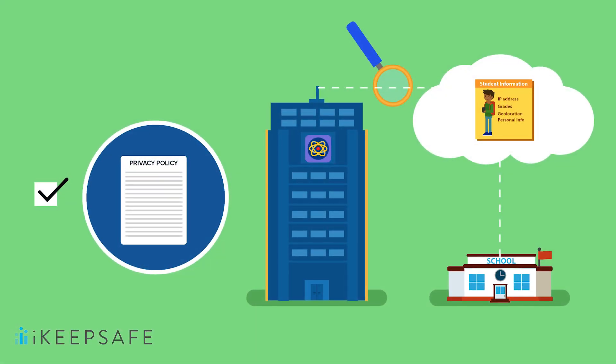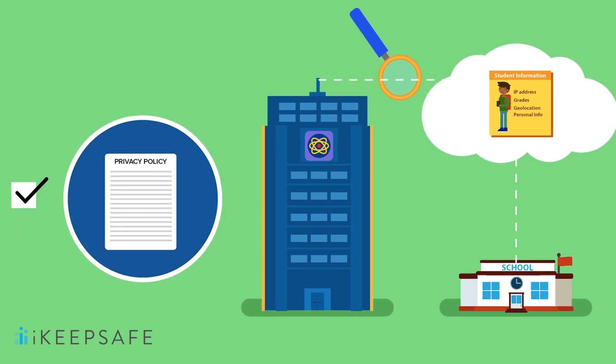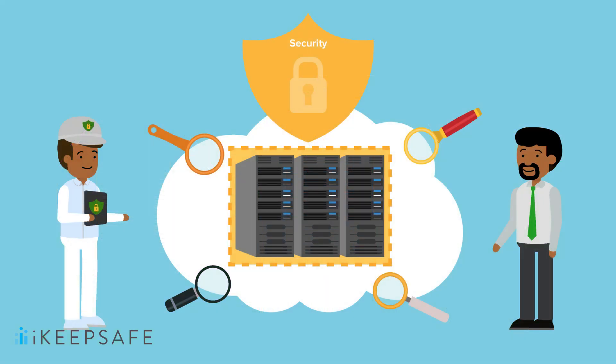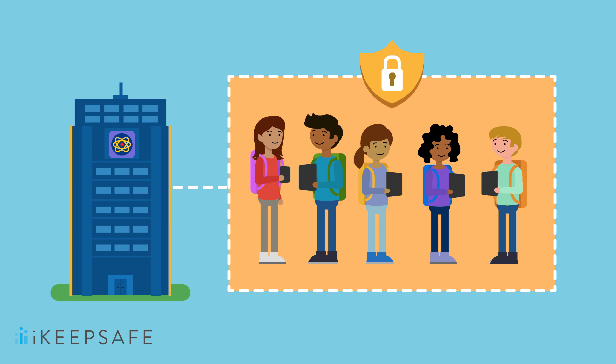Even when a company's privacy practices are spot-on, student information may still be at risk for misuse by hackers or other malicious individuals. Security refers to the technical measures taken to ensure that data is safe and protected, particularly from unauthorized access, use, and disclosure. COPPA and other laws require tech companies to use reasonable security measures that take into account available technology as well as data sensitivity. There are several key security measures that must be taken by tech companies to secure student information.